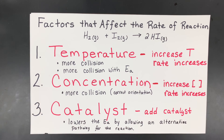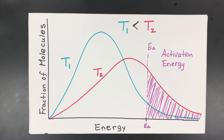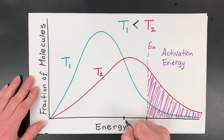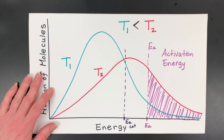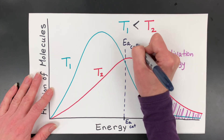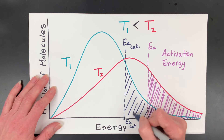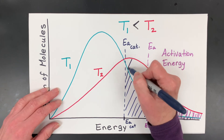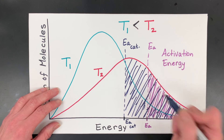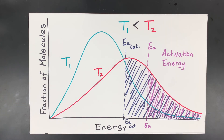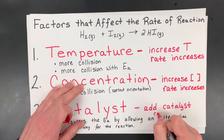Now let me show you on the fraction-of-molecules graph how the catalyst works. If the catalyst lowers the activation energy needed, then the new lower EA falls at a different point on the graph. At the lower temperature T1, nearly all collisions are now effective at creating products. At the higher temperature T2, essentially all collisions are effective. This dramatically speeds up the reaction, so adding a catalyst increases the reaction rate.